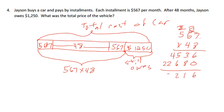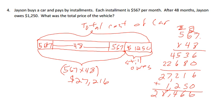Add it up, we have 6, 11, 12, 7, so 27,216. But that was this, this here was equal to 27,216, but he still owes $1,250. So we're going to add $1,250 to it and we have 6, 6, 4, 8, 2. So total car cost was $28,466.